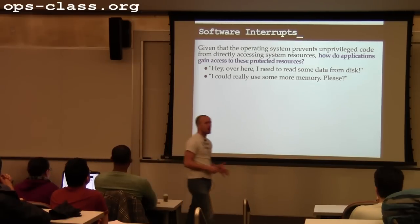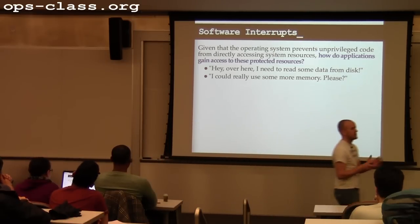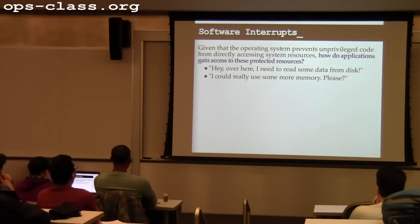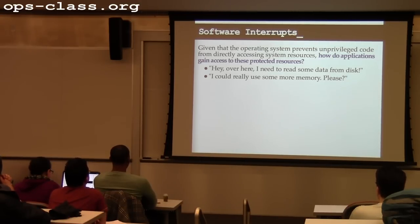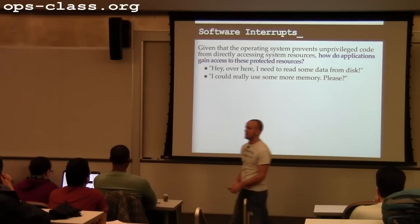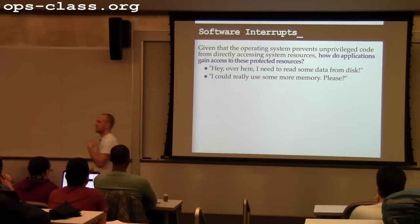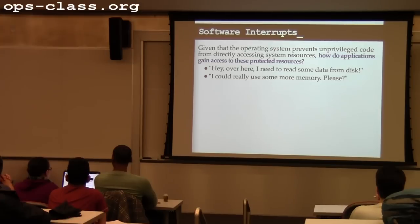Hardware interrupts are the mechanism allowing hardware devices to receive attention. But a big part of what the kernel does is support user applications — it sits between hardware and user-space applications. We've talked about requests for attention coming up from the hardware level, but in order to be useful, the kernel also has to handle requests that come down from applications. There are various types of requests that applications are going to make of the kernel.